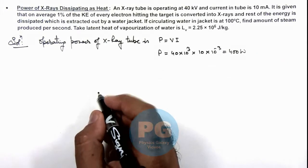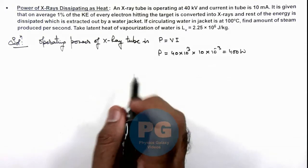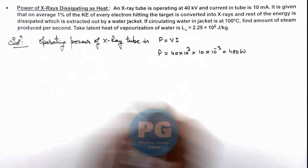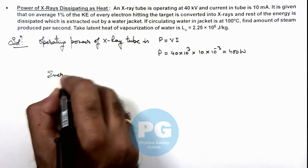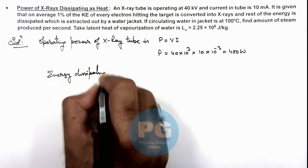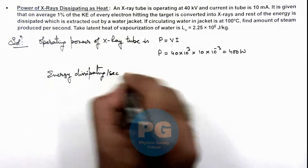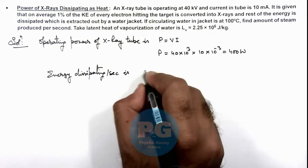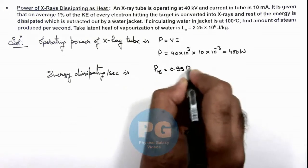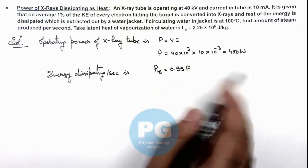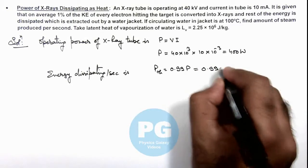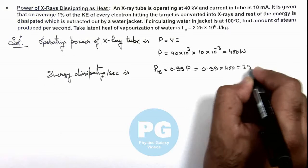And here, we can see in this situation, 1% of kinetic energy is converted into X-rays. That means energy dissipating per second is, this can be written as thermal power produced, which is 0.99 times the operating power because 1% of this power is transformed into X-rays. So this is 0.99 multiplied by 400, that is 396 watts.